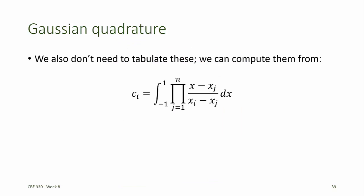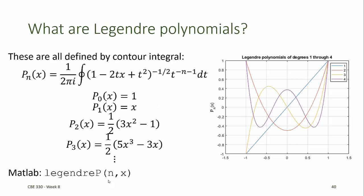We also don't need to tabulate these. There's a formula that we can use to compute the weights ci. The locations in the domain x are the roots of an nth degree Legendre polynomial.